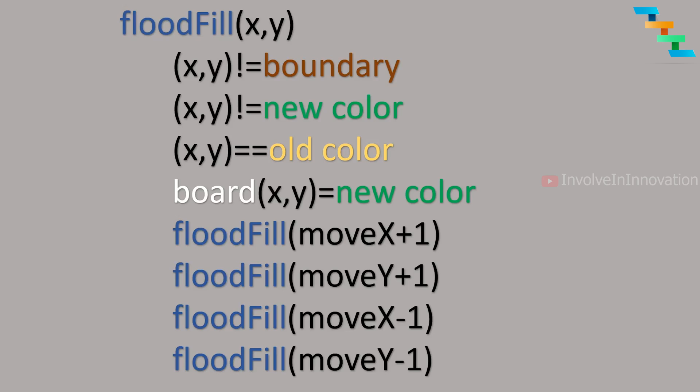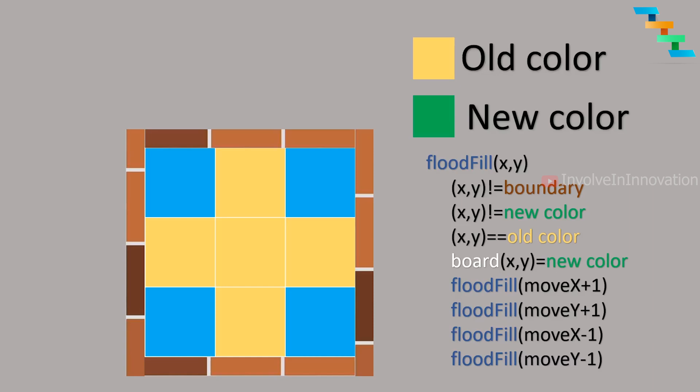We will see this in action with a 3x3 matrix. Here the old color is yellow and the new color we want to replace it with is green. Given the point 1,1, we check whether this point is not equal to the boundary — it is not. We check whether this point is the new color — it is not. We check if this point equals the old color — yes, it is equal to the old color, so we perform the flood fill algorithm.